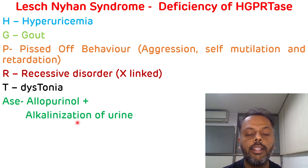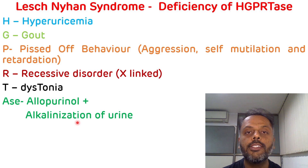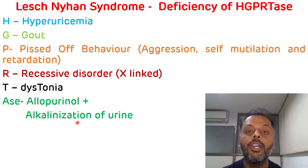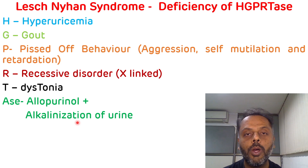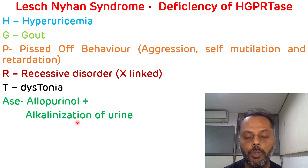Allopurinol and alkalinization of urine are used as treatment for Lesch-Nyhan Syndrome. That is the mnemonic to remember Lesch-Nyhan Syndrome, and that is all about today's video.